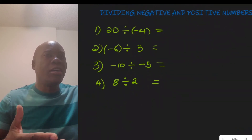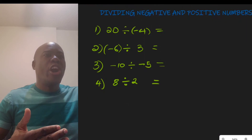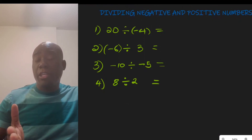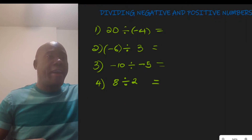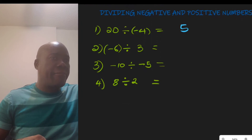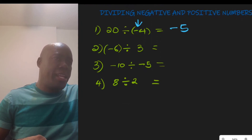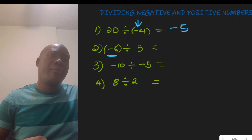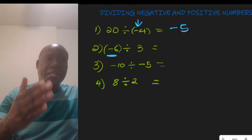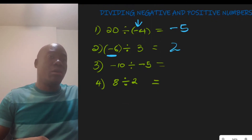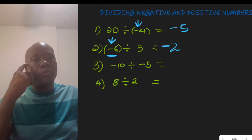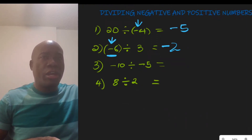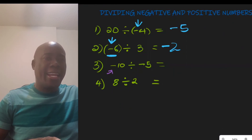The rules for division are the same as for multiplication. For example, negative 20 divided by 4 — the magnitude is 5, but because there is one negative number, the answer is negative 5. Negative 6 divided by 3 — 6 divided by 3 is 2, and with one negative number, the answer is negative 2.